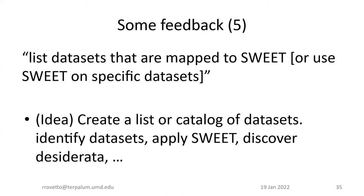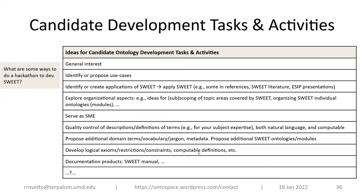Additional feedback from the survey: listing datasets that are mapped to SWEET or use SWEET on specific datasets. An idea is to create a catalog of datasets and apply SWEET accordingly. Some possible development tasks for contributors include identifying use cases, creating applications, exploring structural aspects like more precisely scoping areas of SWEET, serving as a subject matter expert, and quality control for descriptions within one's area of expertise.